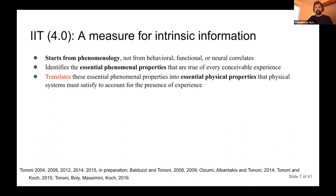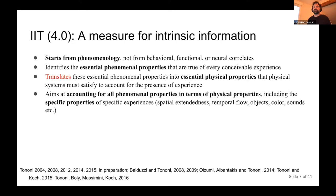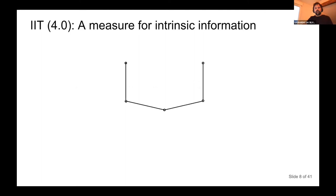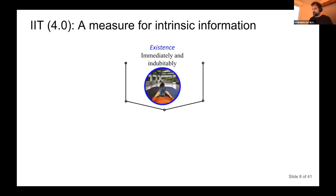The key step is the translation of these phenomenal properties to the physical system. The aim is to account not only generally — is it conscious or not — but specifically: why is space extended, why does time flow as it does, why are objects what they are, colors, etc. So what are these properties?